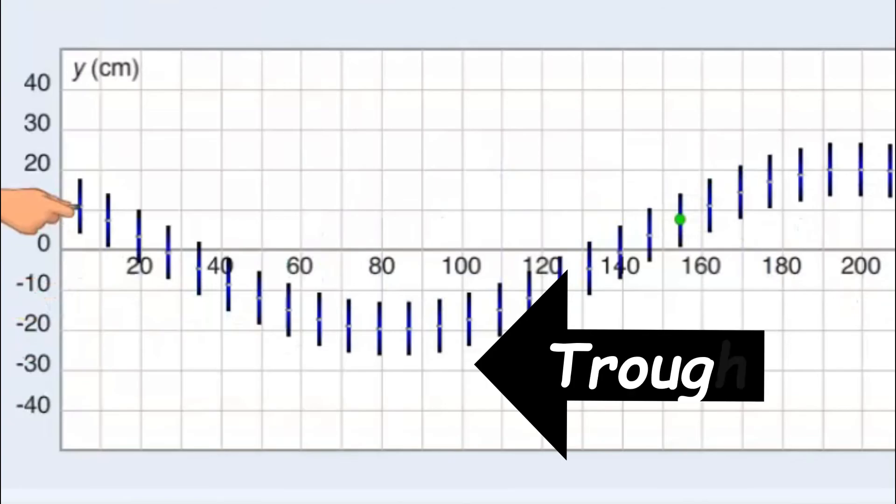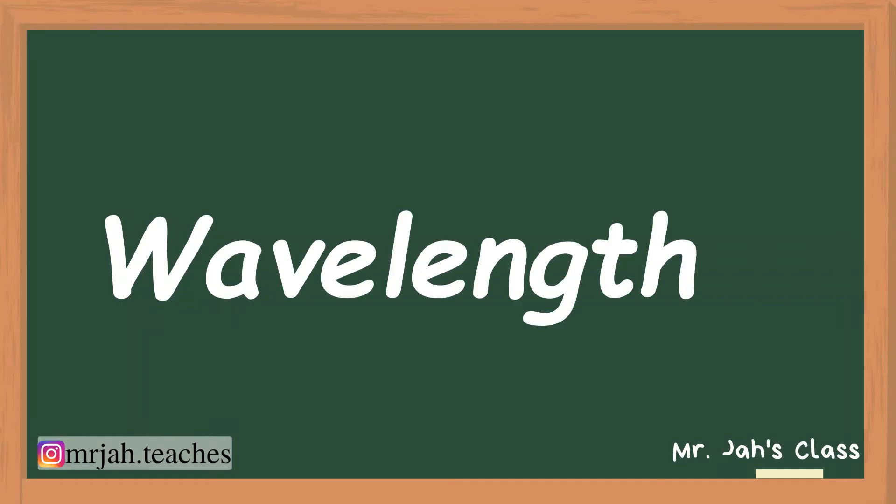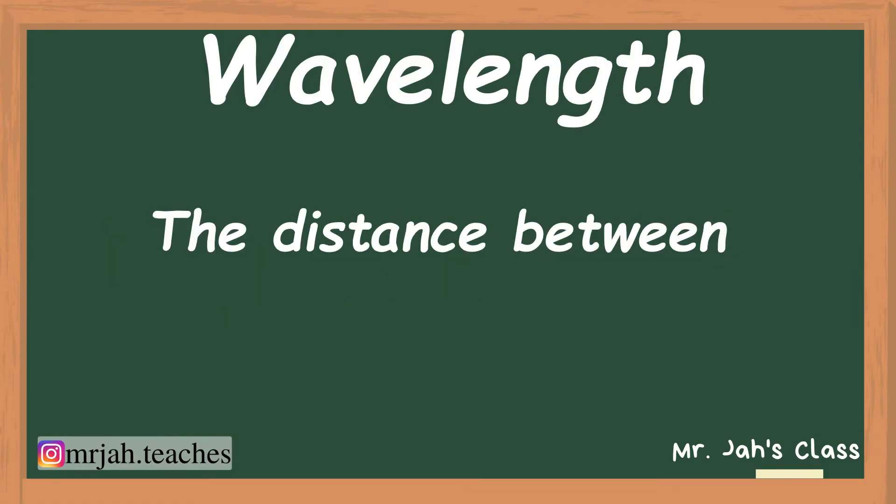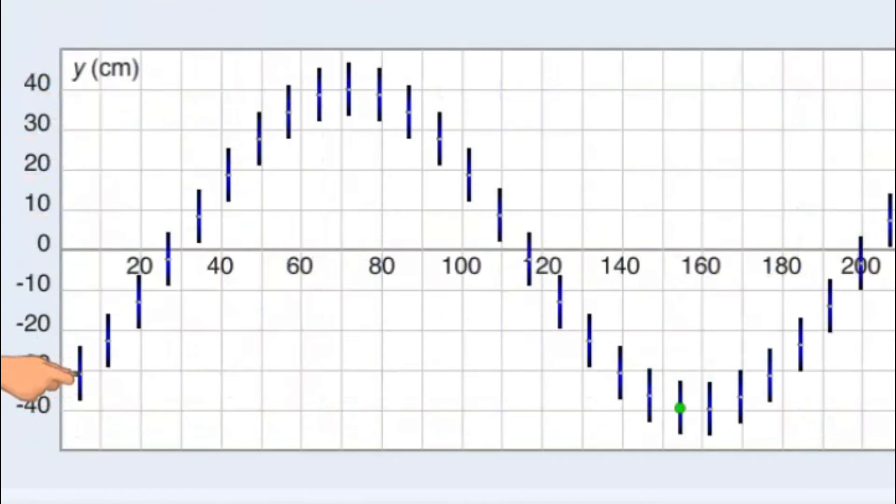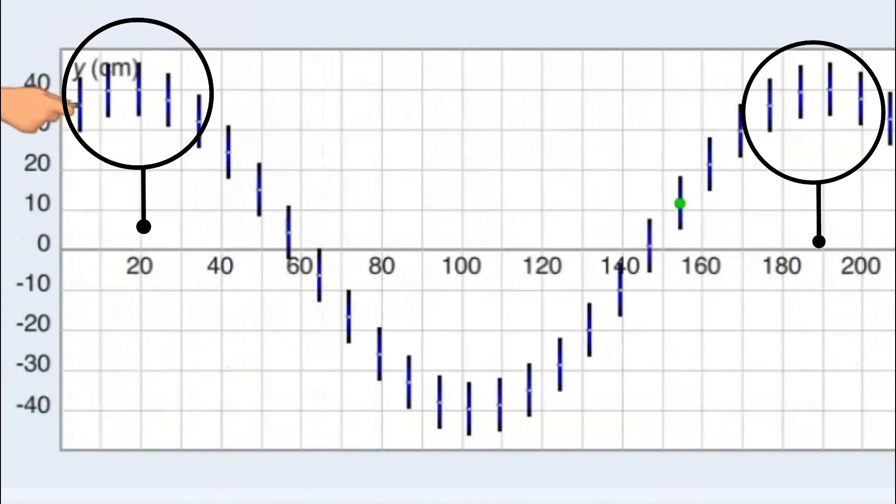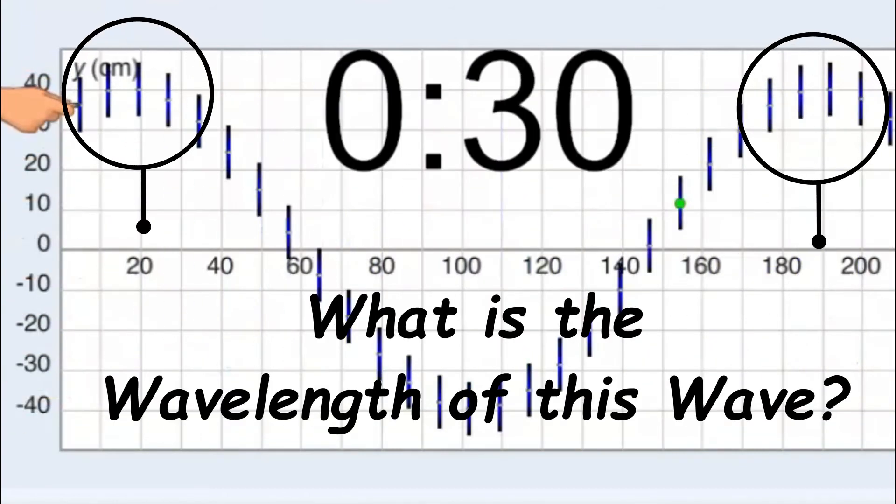The bottom of the wave is known as the trough. Let's look at how to find the wavelength. The wavelength is the distance between successive crests or troughs. What is the wavelength of this wave? You will have 30 seconds to figure it out.